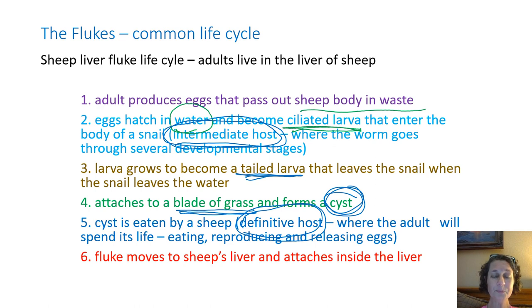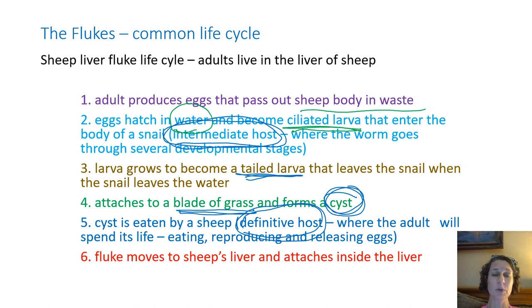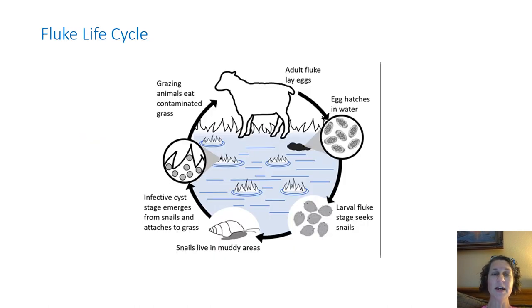Once the fluke is in the sheep, it moves to the sheep's liver and attaches somewhere inside. It feeds on the enzymes being produced there and on the blood filtered through, all the time reproducing and releasing eggs. Most parasites don't want to kill their hosts — they don't want to get rid of their food source — but they definitely will weaken the host in some way. Know the life cycle of the fluke; it's pretty similar to a tapeworm.